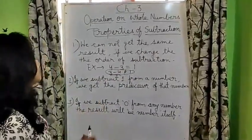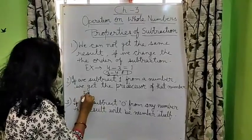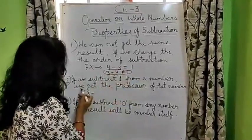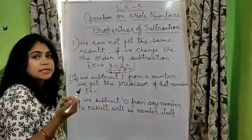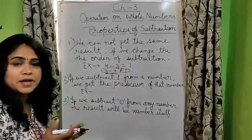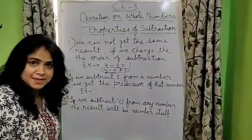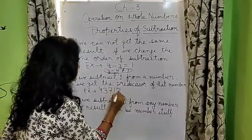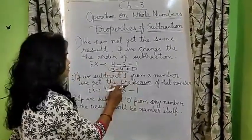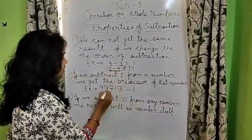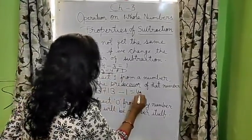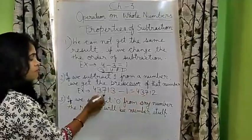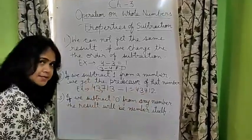Next, if we subtract 1 from any number or a number, we get the predecessor of that number. The number just before a given number is called predecessor. So, if we subtract 1 from any number, if we subtract 1, what do we get? 43,712.